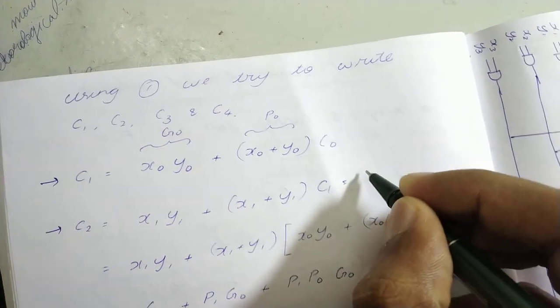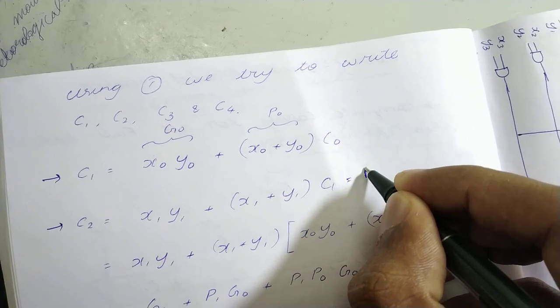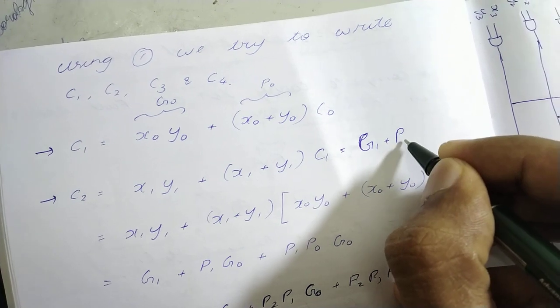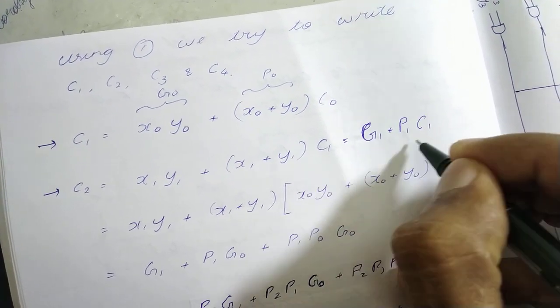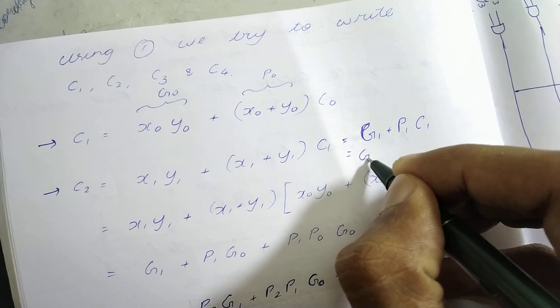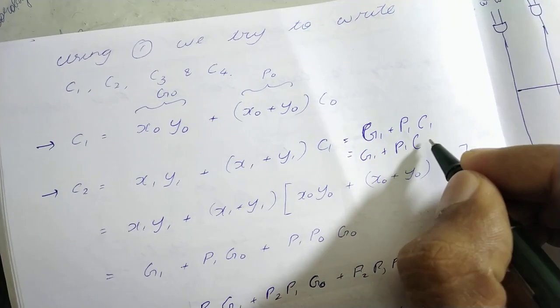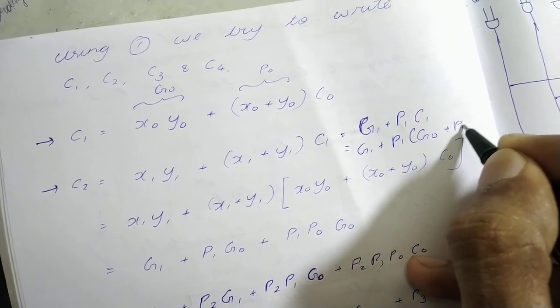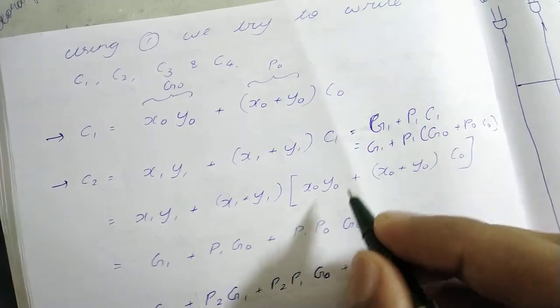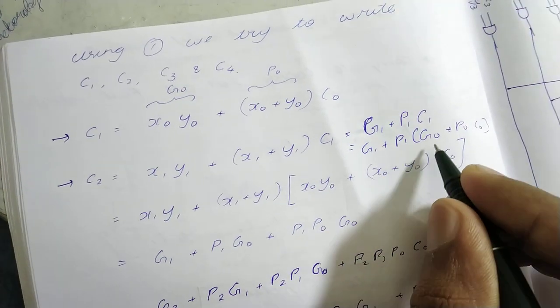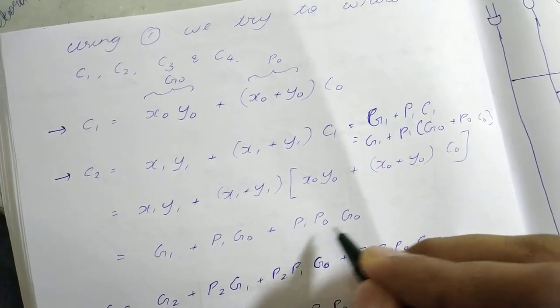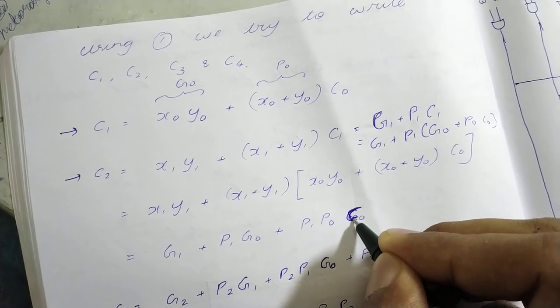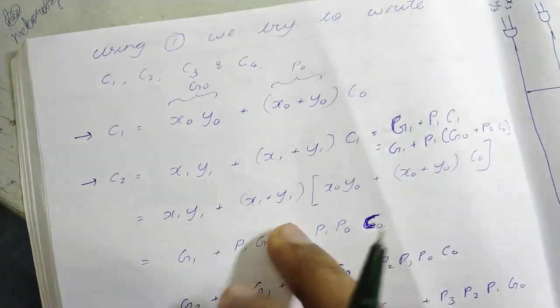Another way we can write this is g1 plus p1 c1. Now what is c1? It's g0 plus p0 c0. So we get g1 plus p1 g0 plus p1 p0 c0. That's what you get.